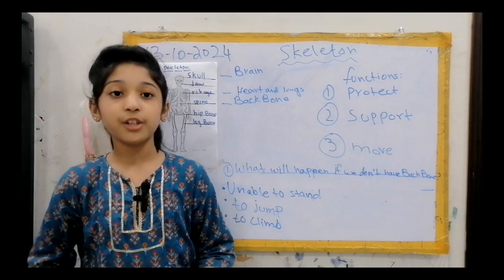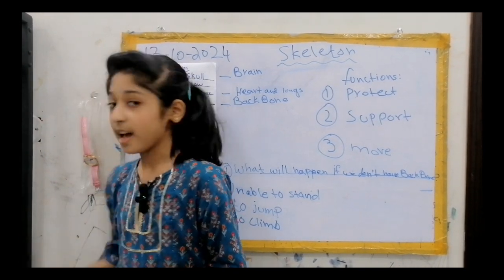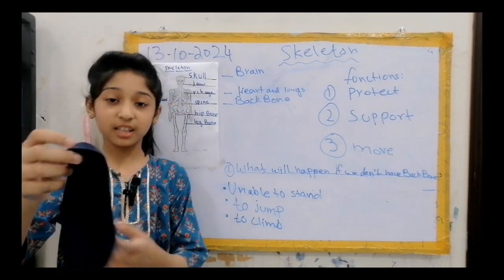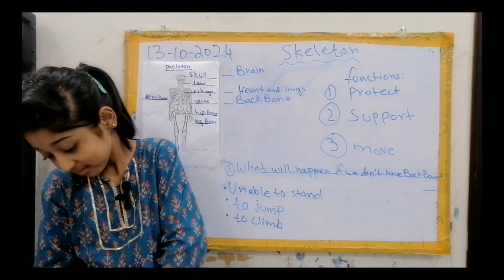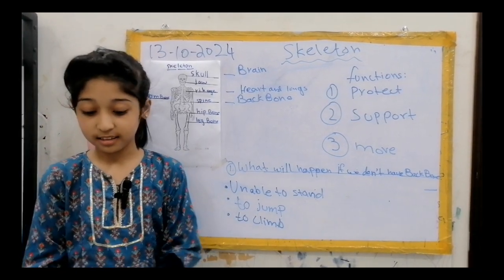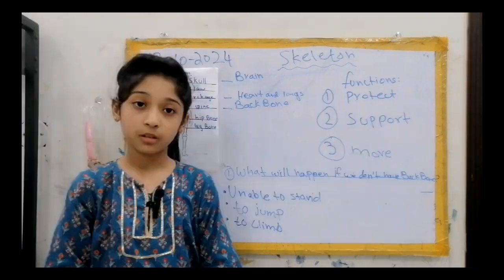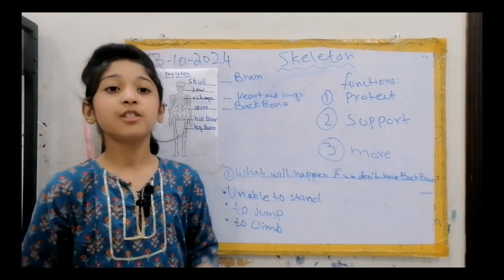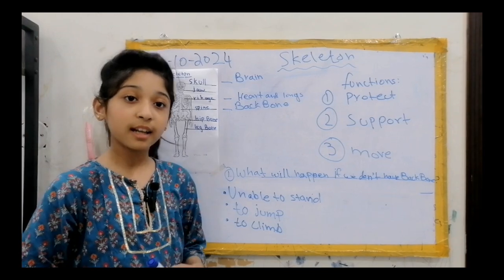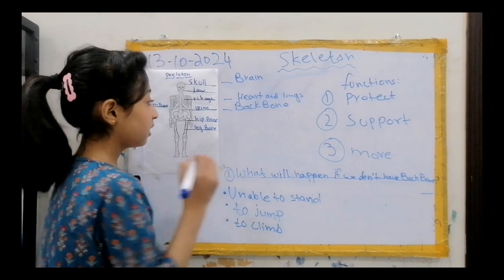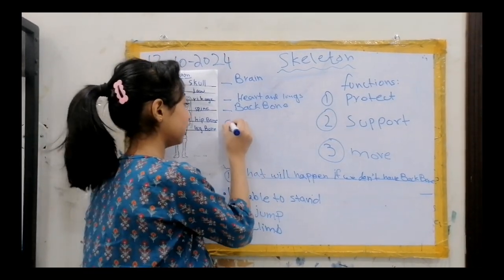Our skeleton also gives us shape, just like a hand sock gives shape. Do you know how many bones there are in a human adult? A human adult has 206 bones.